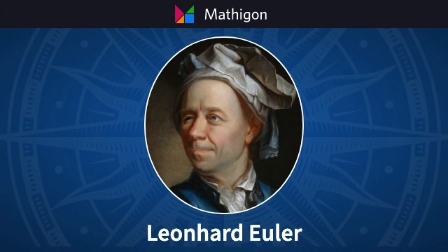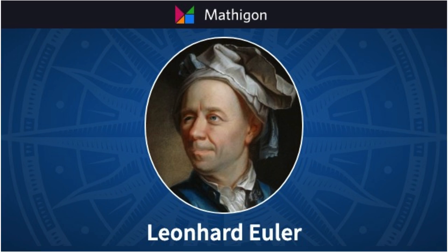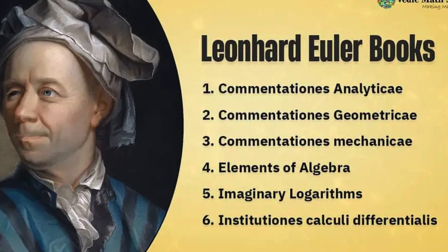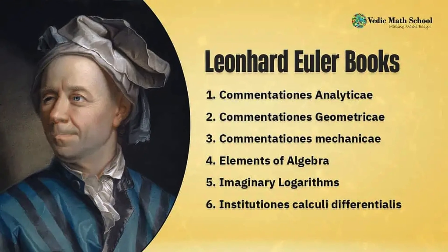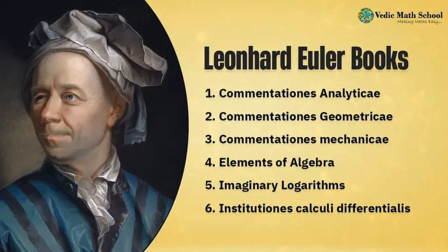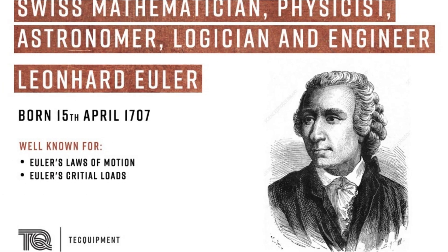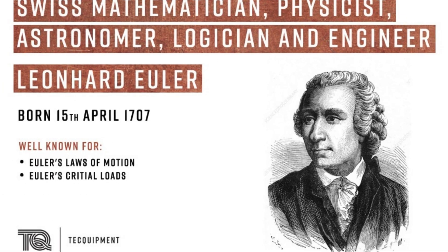Major Works — Graph Theory and Bridges of Königsberg: Euler solved the famous puzzle about crossing seven bridges without retracing steps. In the process, he created Graph Theory, which today powers computer networks, logistics, and social media.